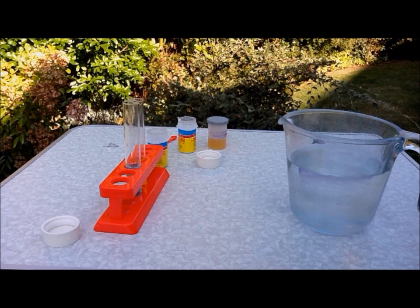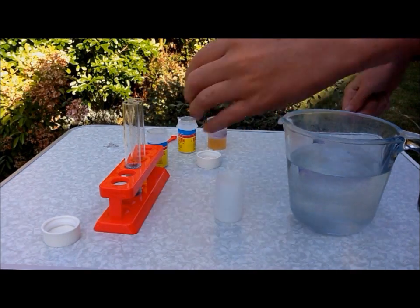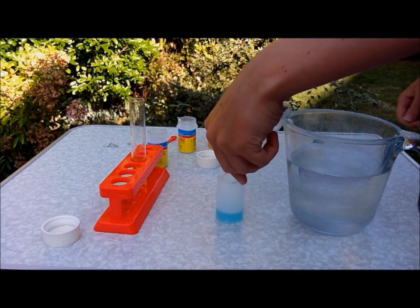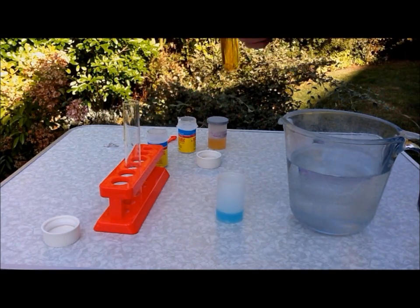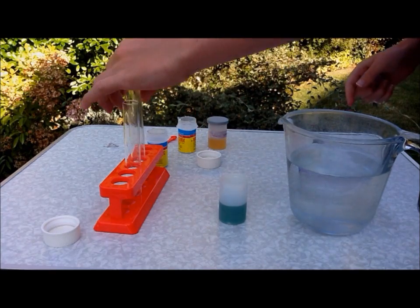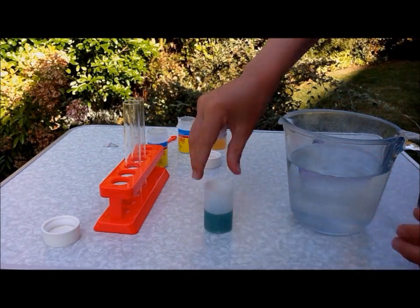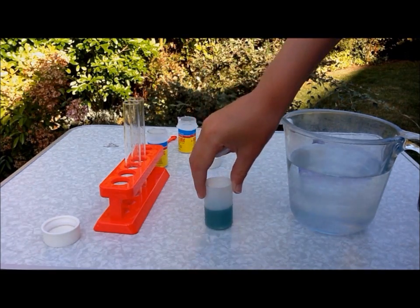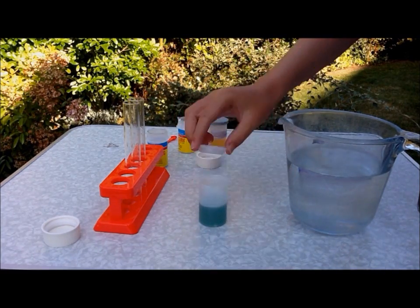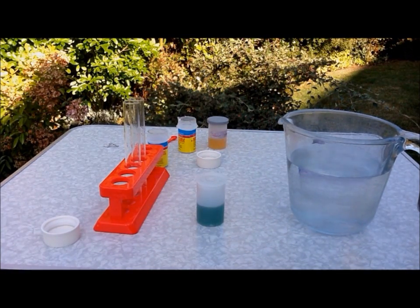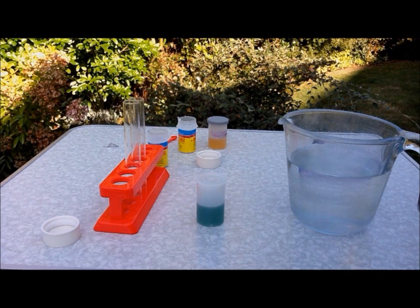Then you need to pour them both in together. Now you have a blue-green Fehling's solution. Then put your cap on it and label it. So that's how you make Fehling's solution.